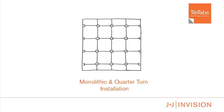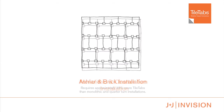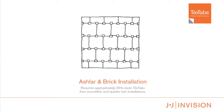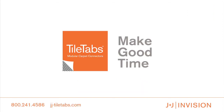Tile tabs may be used for a variety of installation methods. For a monolithic or quarter-turn installation, the tile tabs should be placed at all four corners. For an ashlar installation, place the tile tabs on the top two corners and on the bottom center.